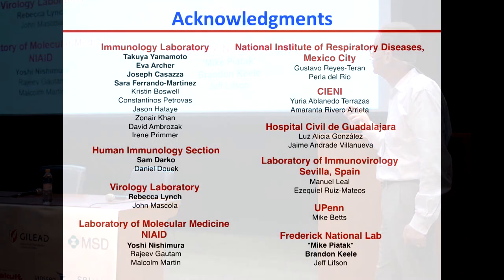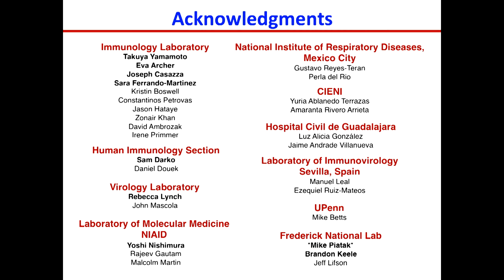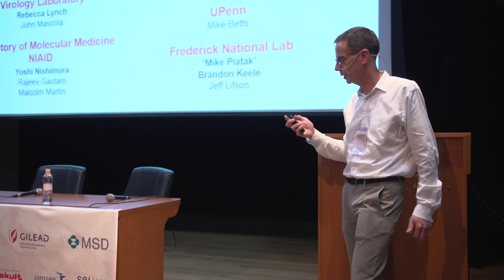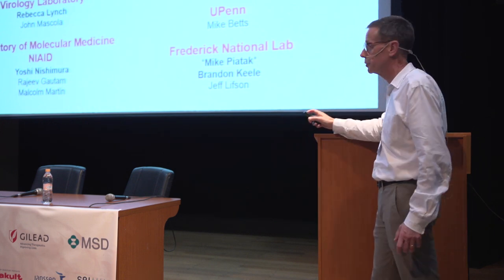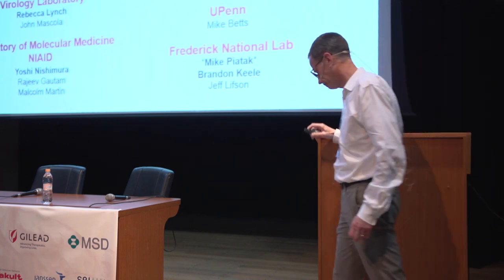There is increased recruitment of CD8 T cells within the B cell follicle and germinal center during chronic HIV infection. These follicular CD8 cells show increased cytolytic activity, and non-HIV-specific follicular CD8 T cells are capable of mediating bispecific antibody-directed killing of HIV-infected cells. Bispecific antibodies may be able to get into germinal centers and mediate some clearance of HIV replication there. I'd like to point out the people who actually did this work: Takuya Yamamoto for the SHIV broadly neutralizing antibody work, Eva Archer for the SIV replication dynamics, Joe Casaza for the detection of HIV-infected T follicular helper cells, and Sarah Ferrando Martinez for the work on follicular CD8 T cells.